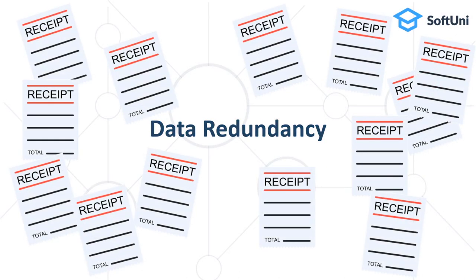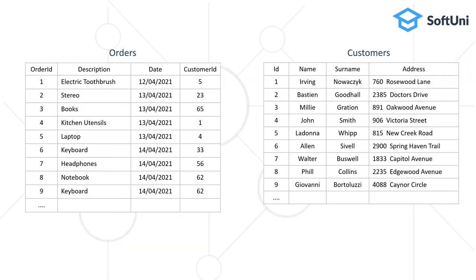Probably one customer will be buying from the store many times, and every time you would have to print their data on receipts. In this case, you will want to avoid data redundancy — you don't want to keep the customer address in the database many times, but only once. This is solved in database systems by keeping data about a certain entity only once and referencing it by its ID from other entities. Customers and orders can be stored in separate collections with a one-to-many relationship, where each order keeps a customer ID number instead of duplicating the entire customer data.